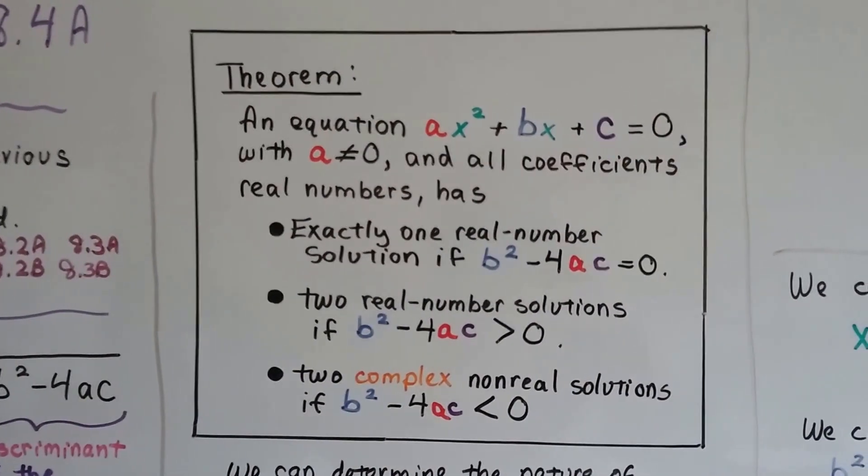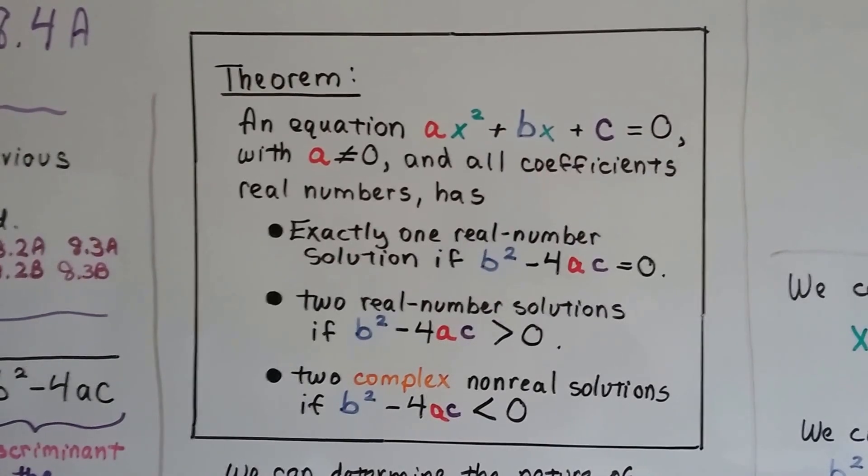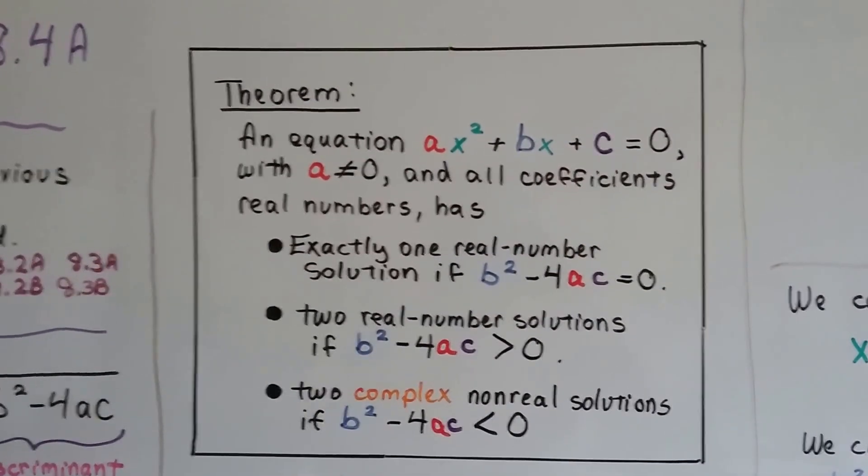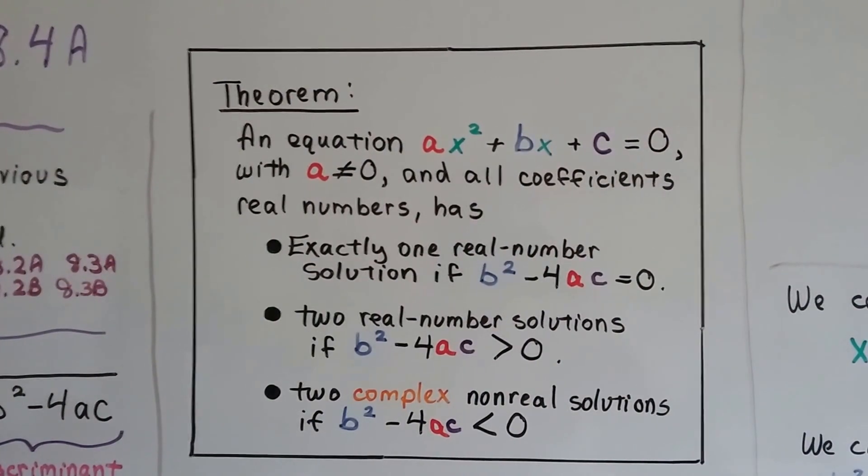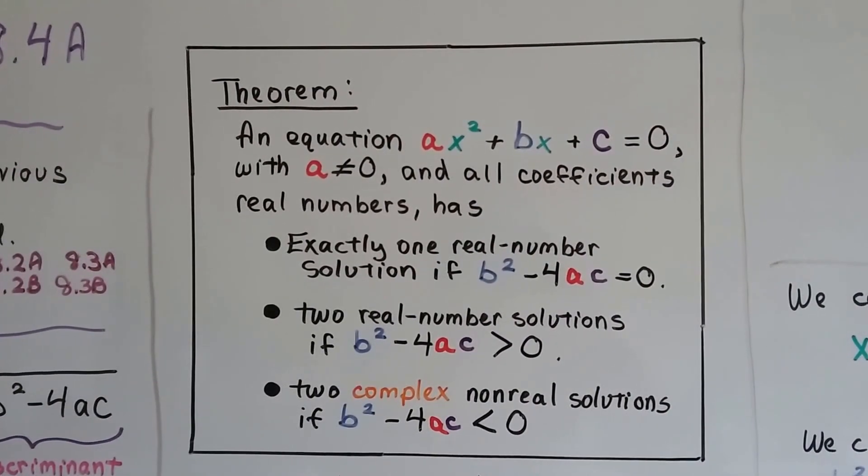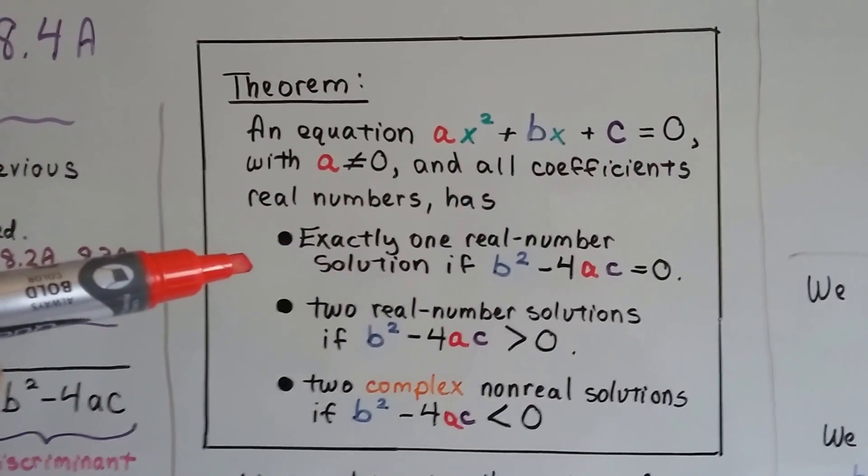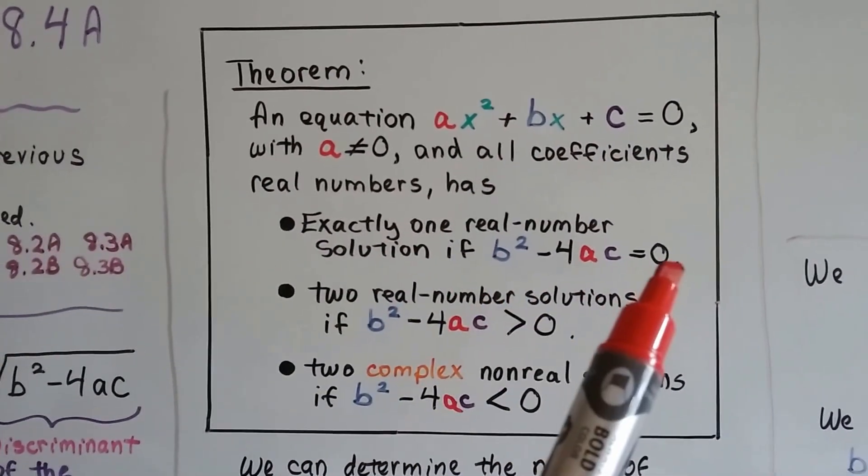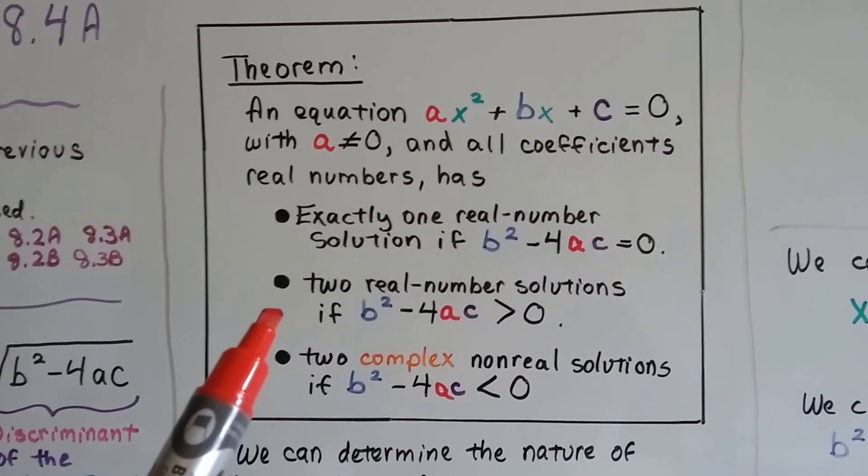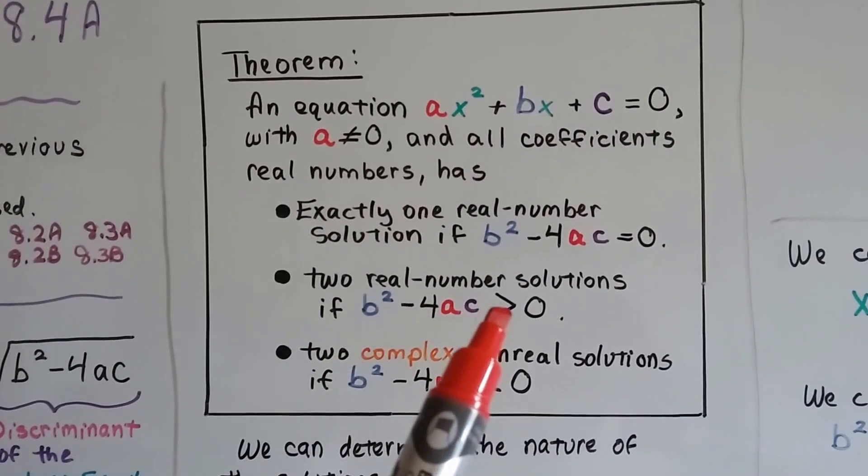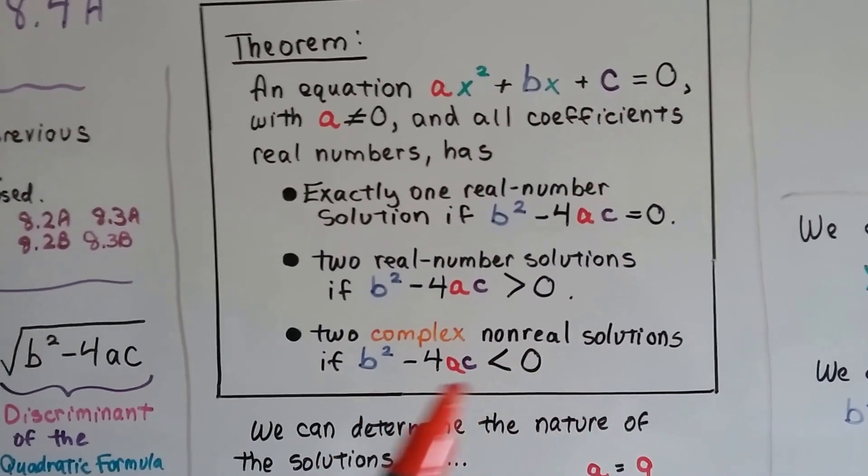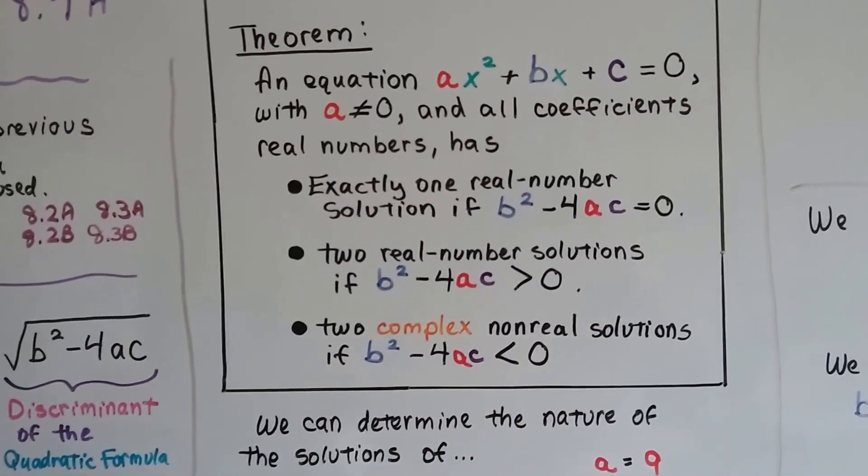An equation, and this is a quadratic equation in standard form, isn't it? ax squared plus bx plus c equals zero. As long as a isn't zero. And all coefficients real numbers has, first of all, exactly one real number solution if that discriminant equals zero. Two real number solutions if the discriminant is larger than zero.